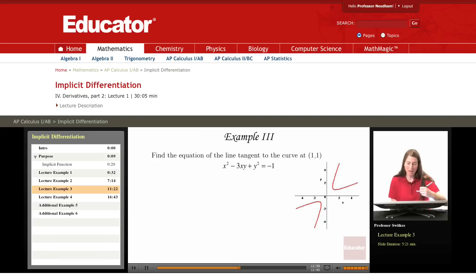I like to do a quick check that this point even is on the curve. Notice that if x is 1 and y is 1, we get 1 squared minus 3 times 1 times 1 plus 1 squared. So we get 1 minus 3 plus 1, which is negative 1. And in fact, that point is this point here on the curve. And so we're going to be finding the equation of the line tangent to the curve at that point.